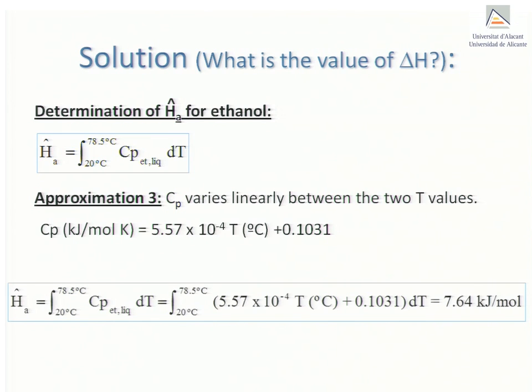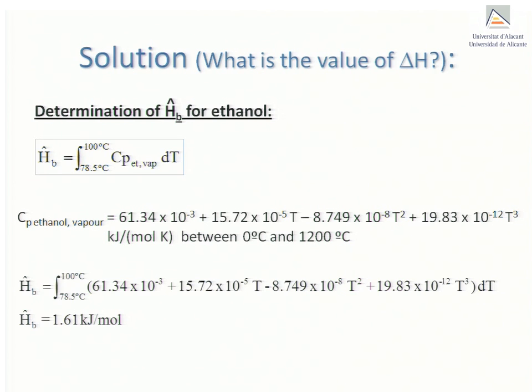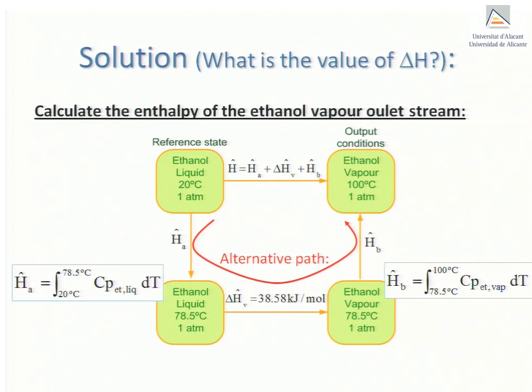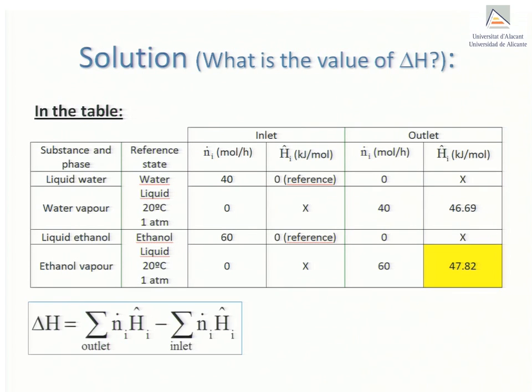Calculating the integral for H hat A gives 7.64 kJ per mole. Calculating now the integral for H hat B, we obtain 1.61 kJ per mole. Finally, the molar enthalpy we seek is just the sum of H hat A, the latent heat of vaporization of ethanol, and H hat B, which comes to a total of 47.82 kJ per mole. The table is now complete. We can thus make use of the expression for calculating the overall enthalpy change delta H. When this is done, the final result we get is 4737 kJ per mole.